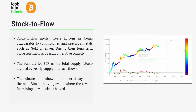To summarize, the stock to flow model treats Bitcoin as being comparable to commodities and precious metals such as gold and silver due to their long-term value retention as a result of their relative scarcity. As more gold and silver is mined, the available supply decreases as there is only a limited supply that can ever be refined and used. Bitcoin is similar in that every four years we have a reduced supply of Bitcoins available, with a hard cap of 21 million that the circulating supply will never surpass. This makes Bitcoin the first digitally scarce asset. The formula for stock to flow is the total supply divided by the yearly supply increase, and the colored dots on the chart show the number of days until the next Bitcoin halving event, where the reward for mining new blocks is halved.